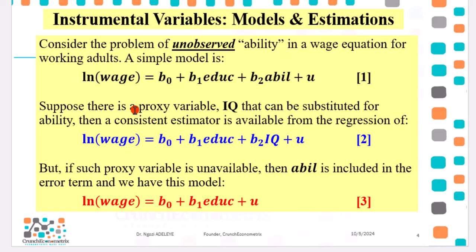But supposing that we have a proxy variable, IQ, that we can substitute for ability. Then we are going to have a consistent estimator from the regression shown in equation two, where the wage is a function of education and IQ. Remember, we are using IQ as a very good proxy of ability.